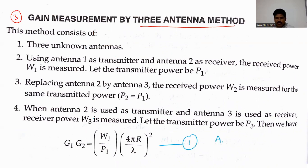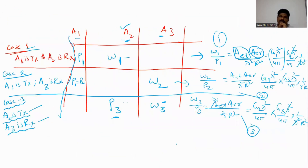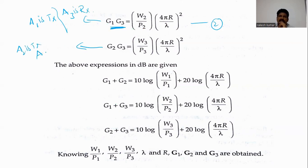Expression 1 (A1 transmitting, A2 receiving): g1 × g2 = W1/P1 × (4π/λ)². Expression 2 (A1 transmitting, A3 receiving): g1 × g3 equals a similar form. Expression 3 (A2 transmitting, A3 receiving): g2 × g3 equals the corresponding form.